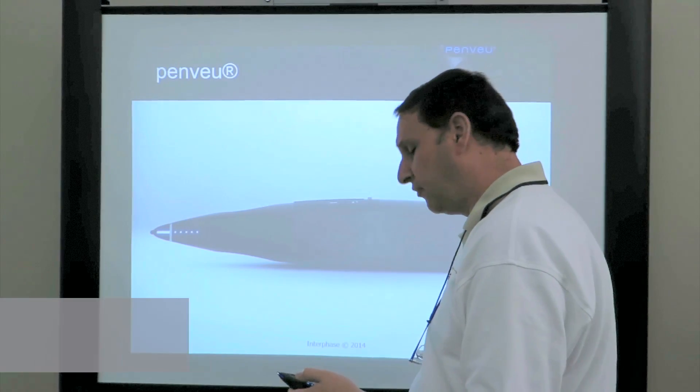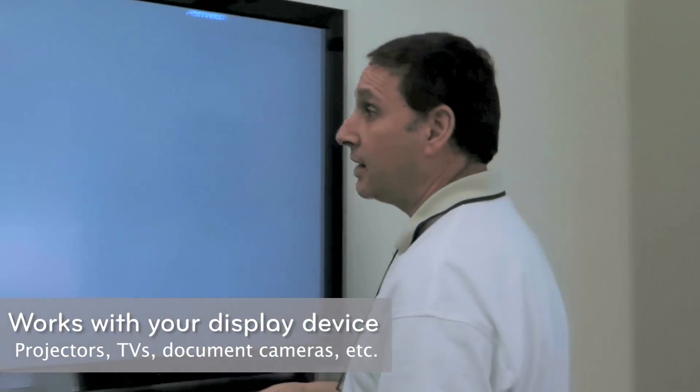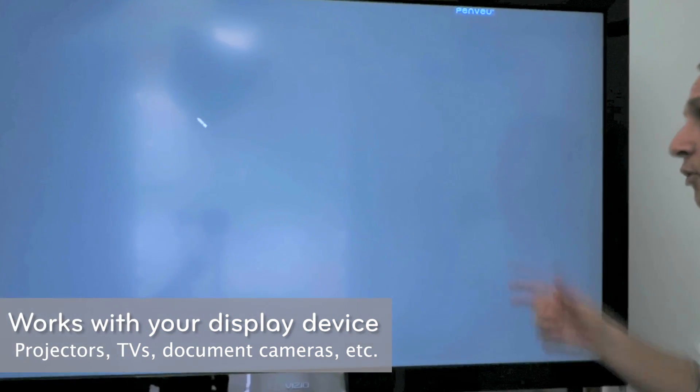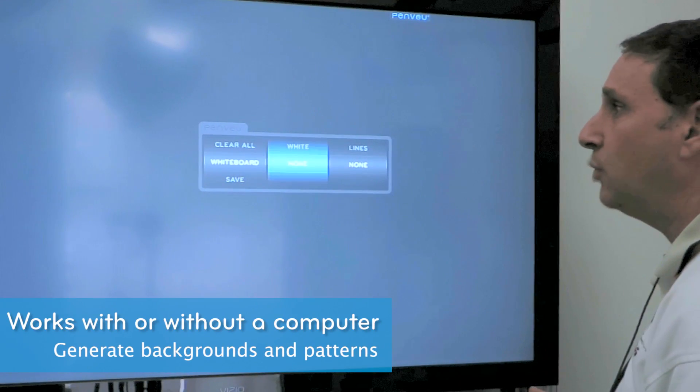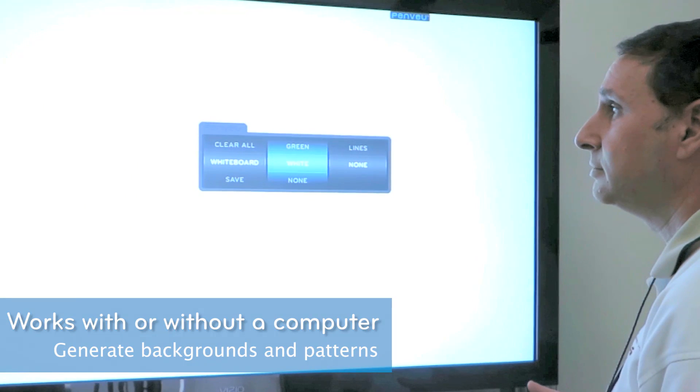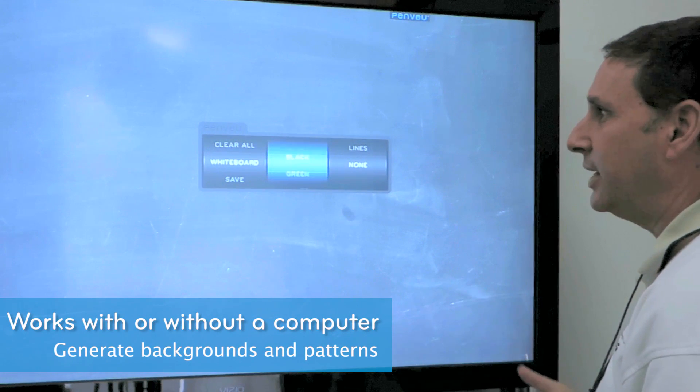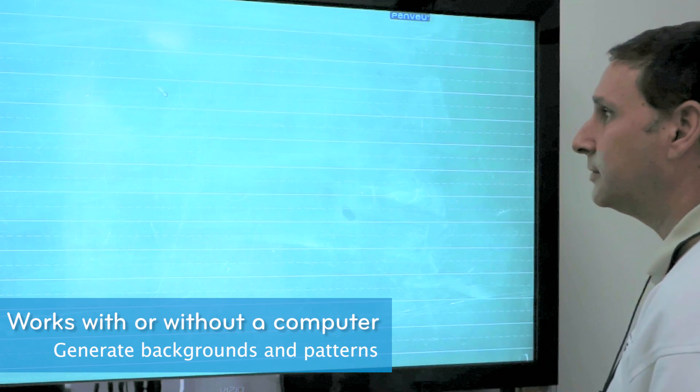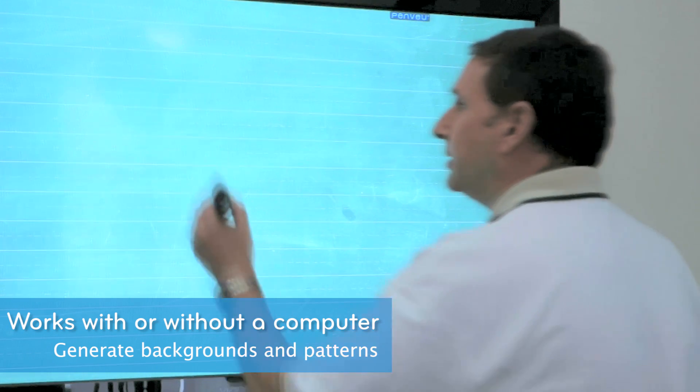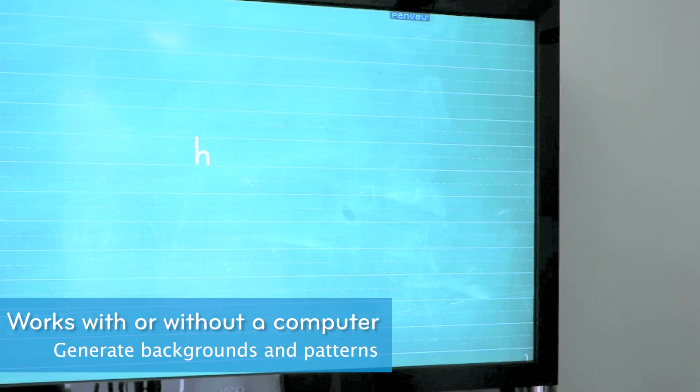Let me show you another cool feature of PenVue. But this time I'm going to switch to the flat panel LCD display. I don't have a computer connected to it, but I actually don't need a computer. All I have to do is choose a whiteboard. I can put a white, green, or a black. I like green. And then I can put lines or a grid on it. And then I'll teach you how to write the letter H on the board or up to 40 feet away from it.